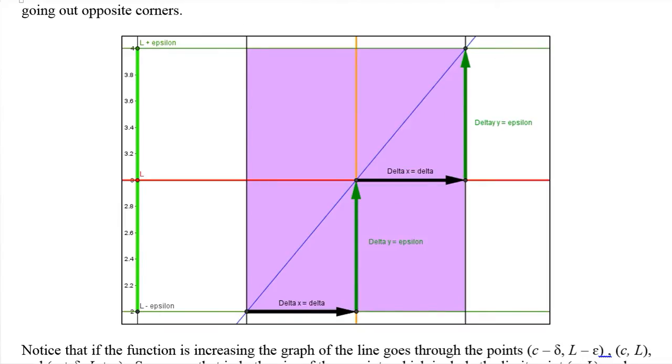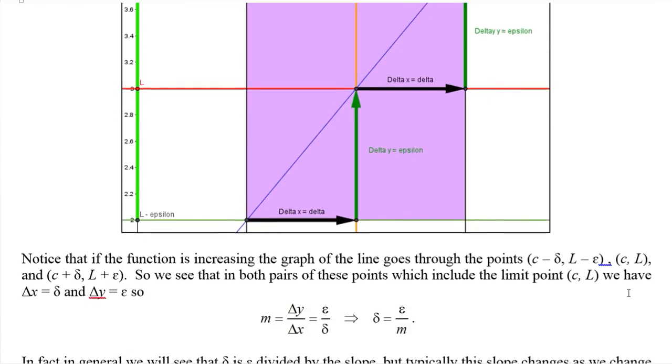As we start here at this point, this is the point (c minus delta, L minus epsilon). And this is the point (c, L). And this point up here in the upper right corner is the point (c plus delta, L plus epsilon). So we have these three points.